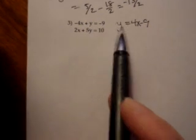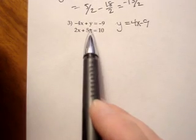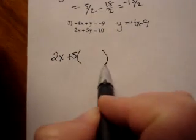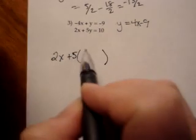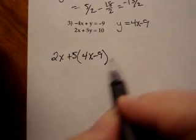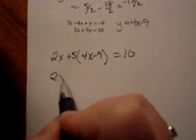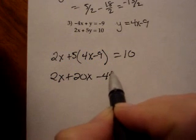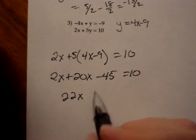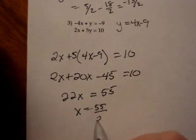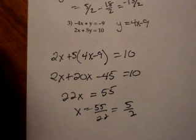Now I'm going to substitute. Into the second equation, remember don't substitute back into the equation you started with. I'm going to have 2x plus 5 times, instead of y, I put y's other name, which is 4x minus 9, and that equals 10. Double check that that matches the second equation. Now I just solve. 2x plus 20x minus 45 equals 10. 22x equals 55. x equals 55 over 22, which reduces to 5 halves.